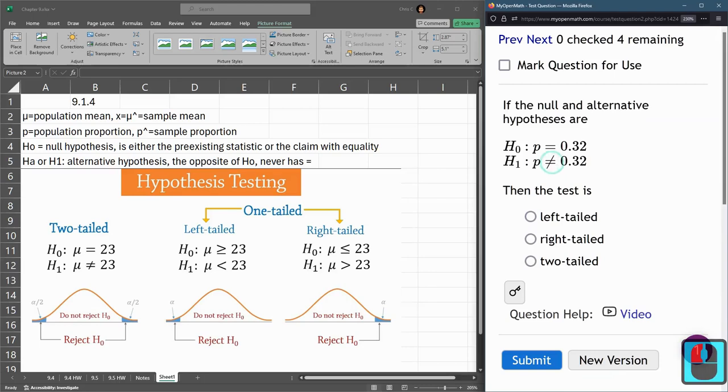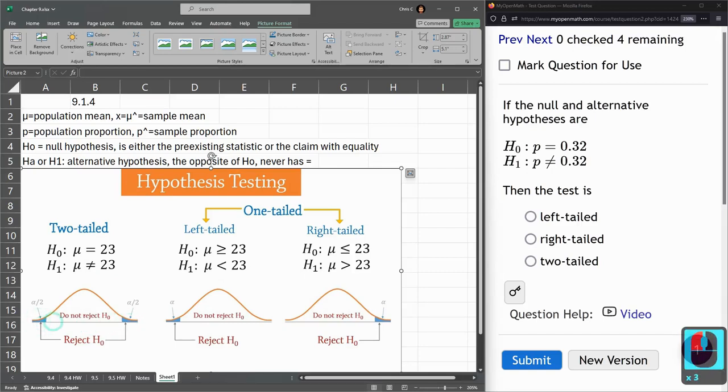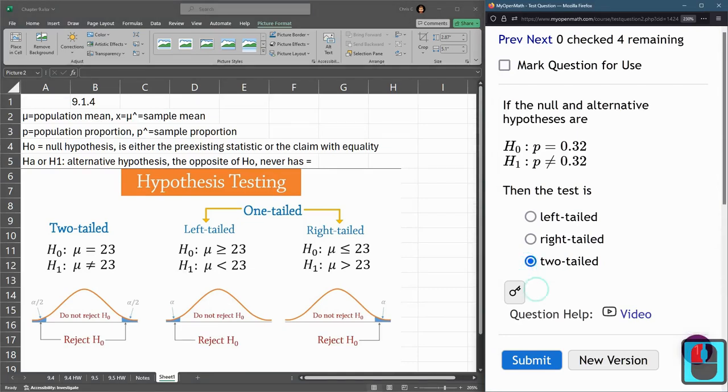All right, not equal. Good enough. All right, this one's not equal, so it's not left or right. It's going to be two-tailed. Your value could fall outside here on either side, so it's two-tailed.